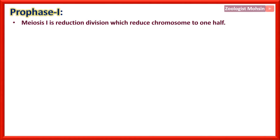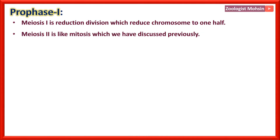Prophase 1 of Meiosis 1. Meiosis 1 is the reduction division which reduces chromosomes to one half — so meiosis 1 is actually the reduction division, while meiosis 2 is like mitosis. Notably, the interphase of meiosis lacks G2 phase — another distinctive and important feature.